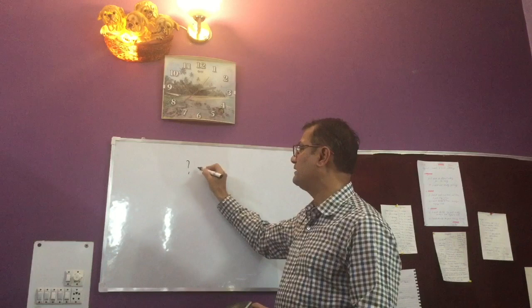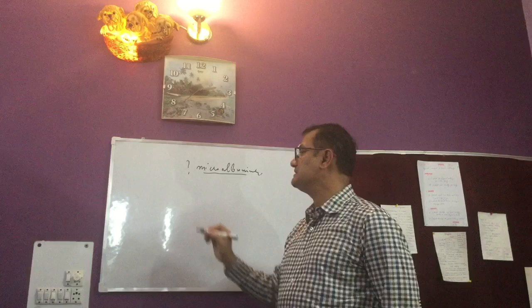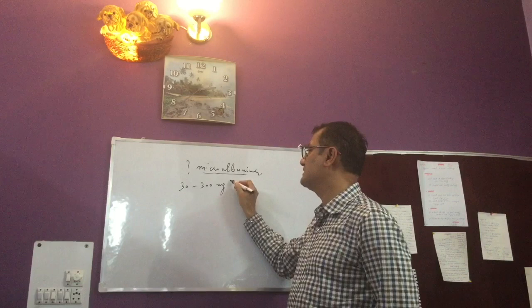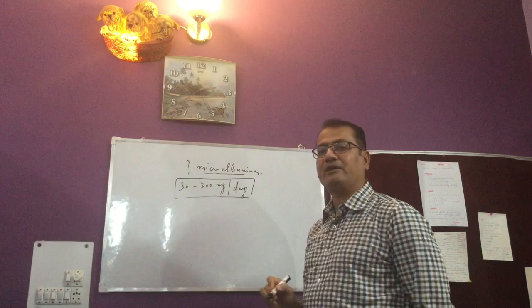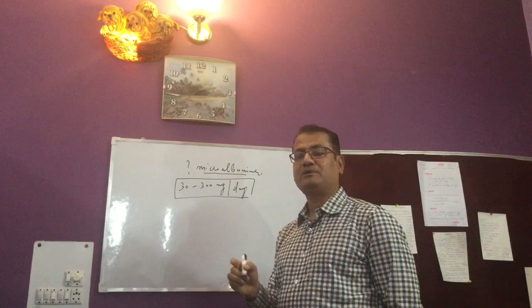So what is microalbuminuria? Now, by definition, we define microalbuminuria as albumin losses of 30 to 300 milligrams per day. Now, when we go by this definition of microalbuminuria, we need to advise the patient that see, you need to collect your urine for full one day.